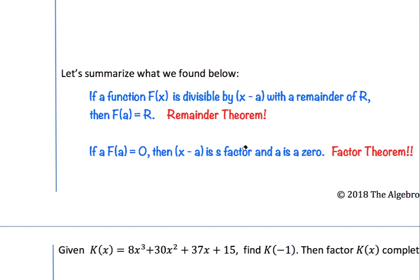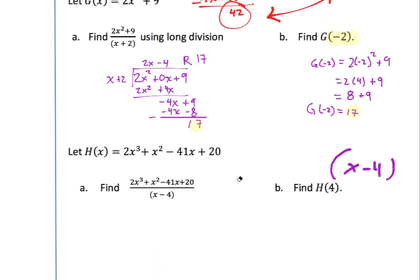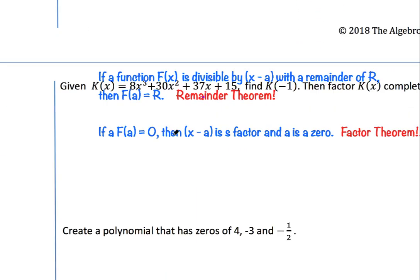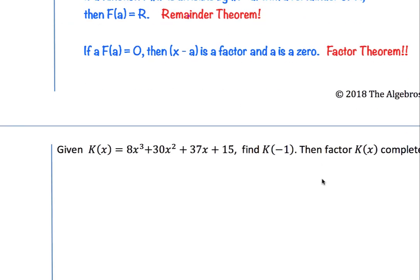We found out that if you find a value and it equals zero, then that value is a zero of the function. So if h of a equals zero, then x minus a must have been a factor. If f of a equals zero, then x minus a is a factor, and a is also a zero. That's the Factor Theorem.